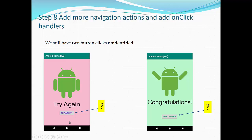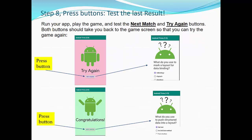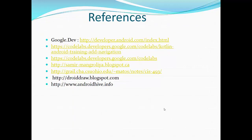Please note, you have to run the project and test the final result before proceeding to the individual part. For individual work, you will add a rules button and an about button to the layout for the title fragment. When the user taps the rules or about button, the application navigates to the rules fragment or about fragment as appropriate. This was a brief demo and overview of navigation. If you have any questions, please let me know. Thanks a lot.